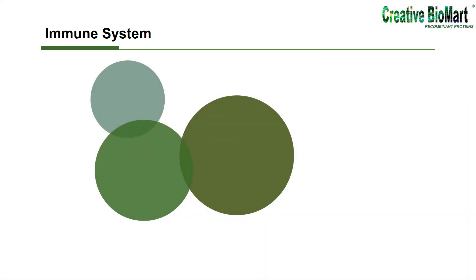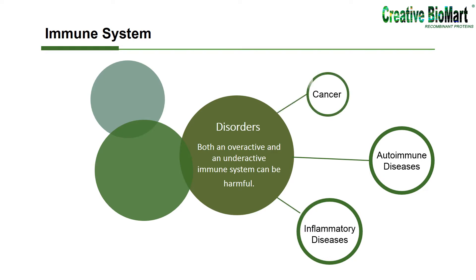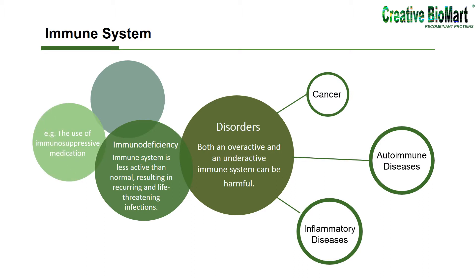Both an overactive and an underactive immune system can be harmful. Disorders of the immune system can result in autoimmune diseases, inflammatory diseases, and cancer. Immunodeficiency occurs when the immune system is less active than normal, resulting in recurring and life-threatening infections. In humans, immunodeficiency can either be the result of a genetic disease or the use of immunosuppressive medication. In contrast, autoimmunity results from a hyperactive immune system attacking normal tissues.